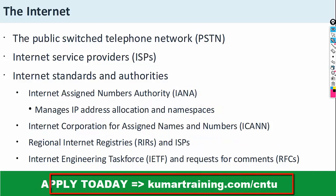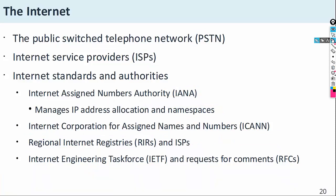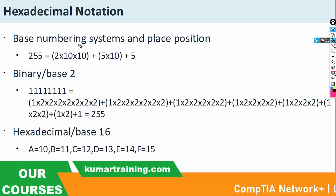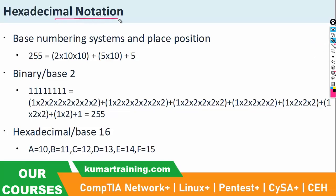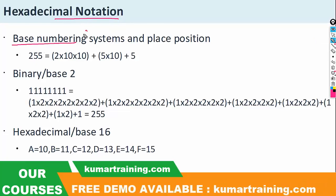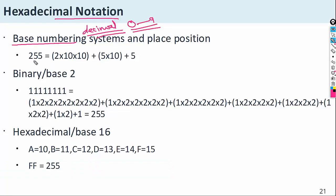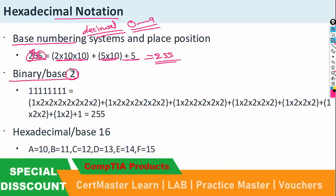Request for Comments (RFC) — all these things make up the internet. IPv4 uses decimal notation, but IPv6 uses hexadecimal notation. Hexadecimal is another type of notation. First, let's discuss base numbers: in the decimal number system, the value ranges from 0 to 9. For example, 255 is calculated as 2×100 plus 5×10 plus 5, giving a total of 255.